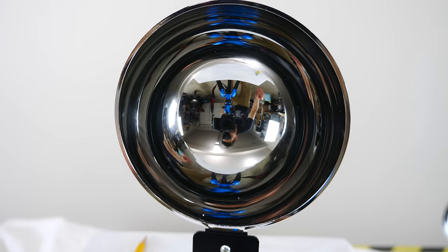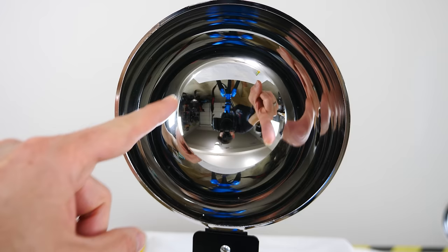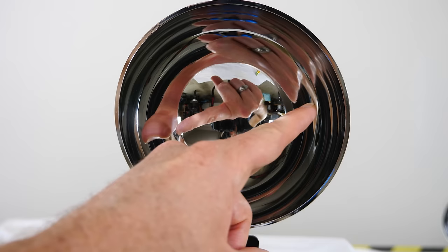Now the reason it appears brighter in the middle is because these are the rays of light that only undergo one reflection. Everything outside of this sphere here is undergoing one reflection, two reflections, three reflections, four reflections, and so on.